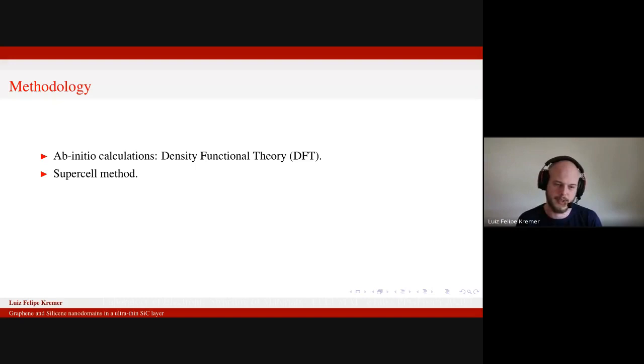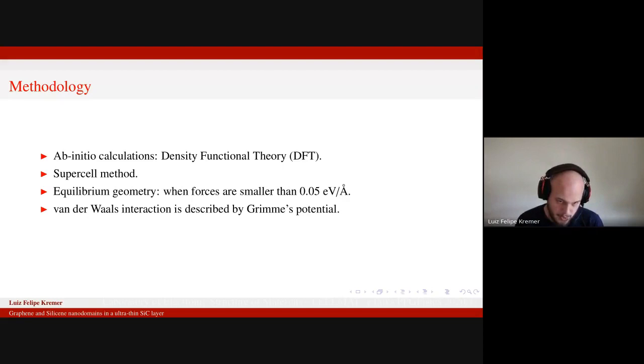Also, the equilibrium geometry or the most stable structure is obtained when you have forces smaller than 0.5 electron volts per angstrom. We also use Grimme's potential, a semi-empirical potential that's used for van der Waals interaction that's not described in DFT, so you have to add it. This is implemented in SIESTA code that we use in the work.